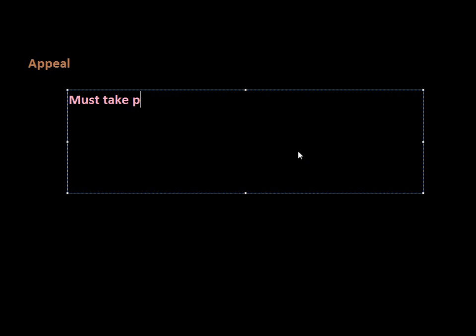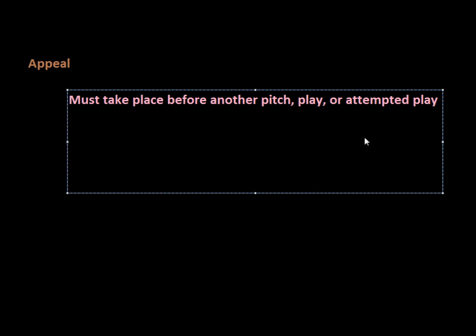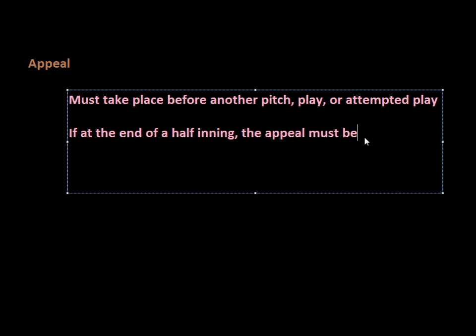So how do appeals work? First, they must be made before another pitch, play, or attempted play takes place. An attempted play would be something like a pick-off attempt on a base runner by the pitcher. The rules also say that if it occurs at the end of a half inning, the appeal must be made before the players leave the field.